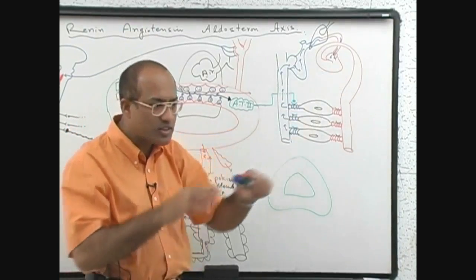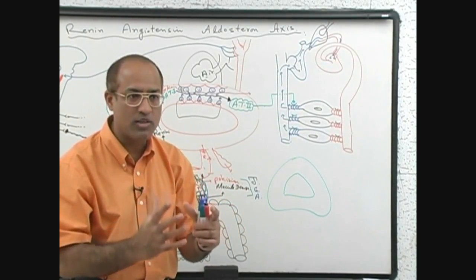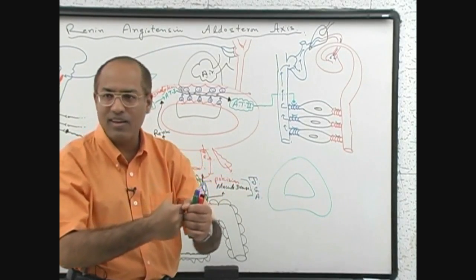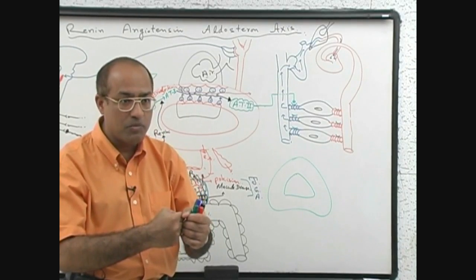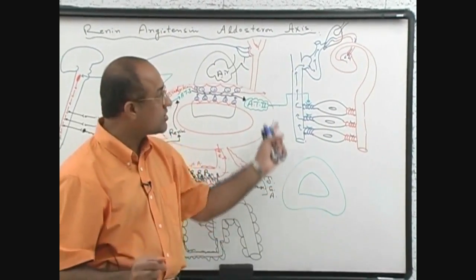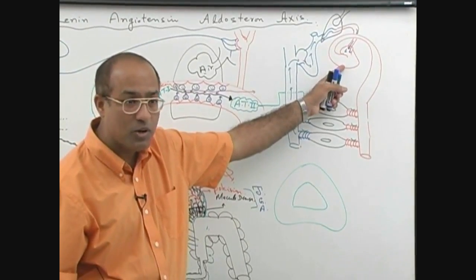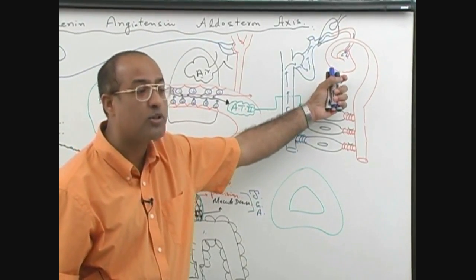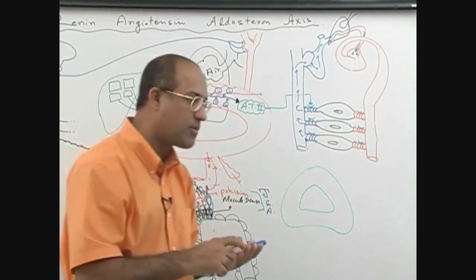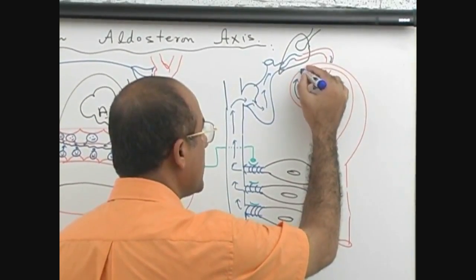Increased cardiac filling leads to increased end-diastolic volume and increased end-diastolic pressure. The ventricle is stretched and contracts more. According to the Frank-Starling law, the more you stretch the myocardial cells, the more they contract — within physiological limits. Whenever venous return is more and end-diastolic volume is more, we say preload on the heart is more. Preload is the amount of blood in the ventricle on which it has to produce contraction. More blood accumulated means more stretch, more contraction, and therefore increased stroke volume.